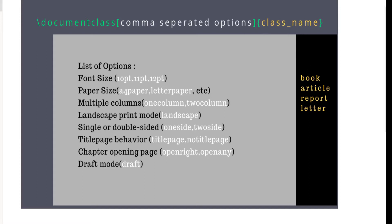There are four popular LaTeX classes: book, article, report, and letter. The options you can put in square brackets include font size — by default it is 10pt, and you can put 11 or 12pt — and paper size. I'm showing these options in the margin tutorial because font size and paper size options affect the default margin sizes. LaTeX sets the default margin sizes depending on what font size, paper size, and class you are using.